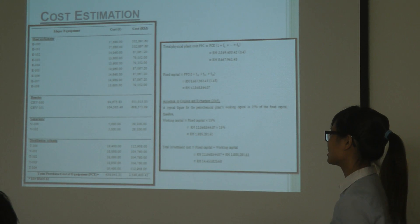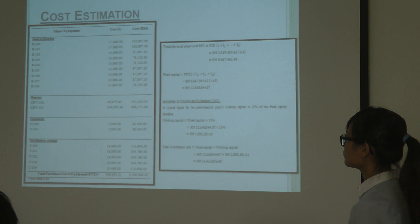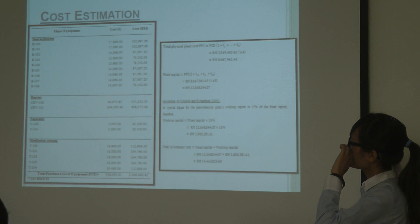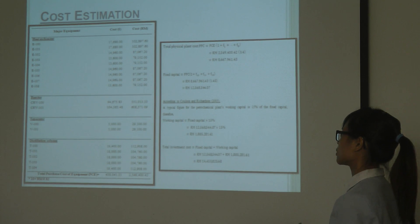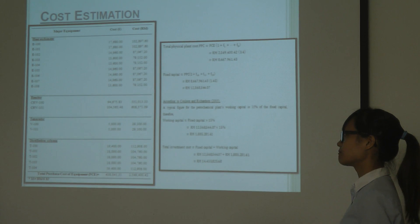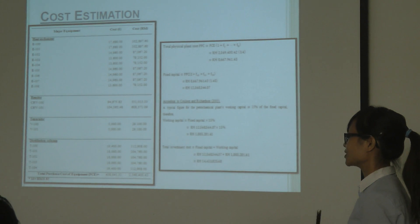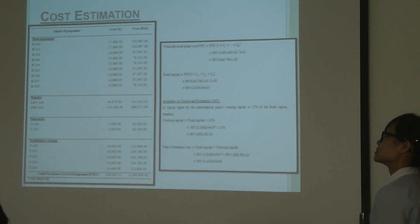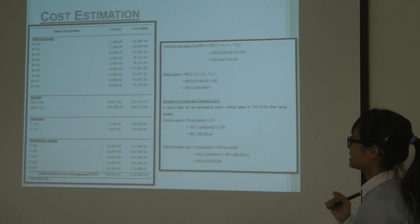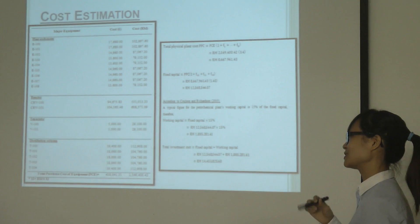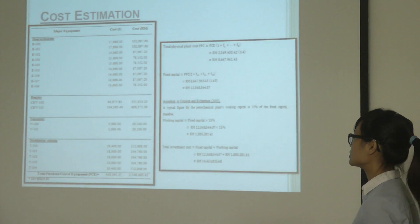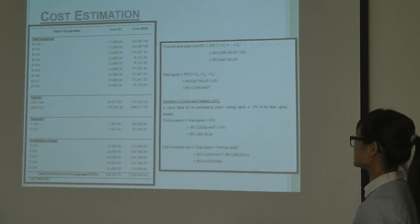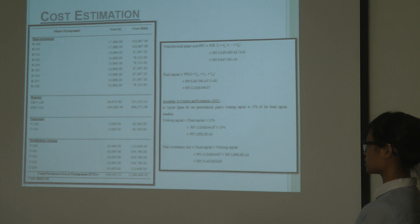For cost estimation, we first calculate the total purchased cost of equipment. Before that, we must size each piece of equipment. For heat exchangers, we obtain the heat transfer area from HYSYS along with the operating pressure and material type. From charts of heat exchanger cost versus heat transfer area, we obtain the base cost and then apply material and pressure factors to get the purchased cost. A similar method is used to calculate the purchased cost of vessels, separators, and distillation columns.